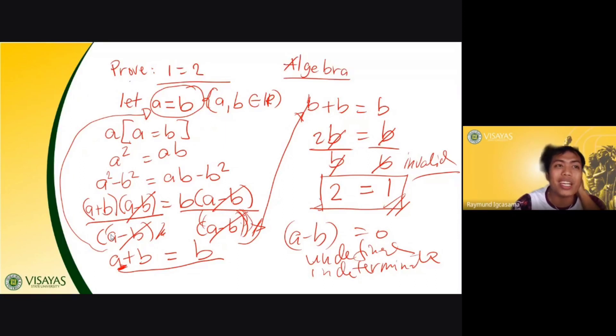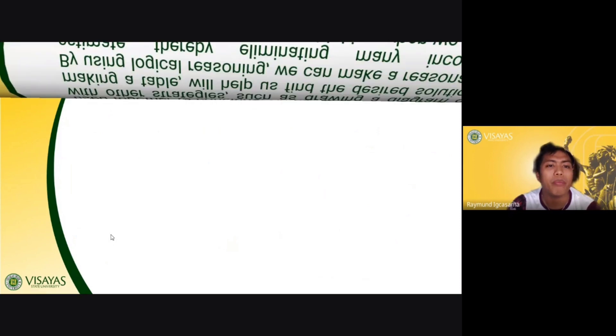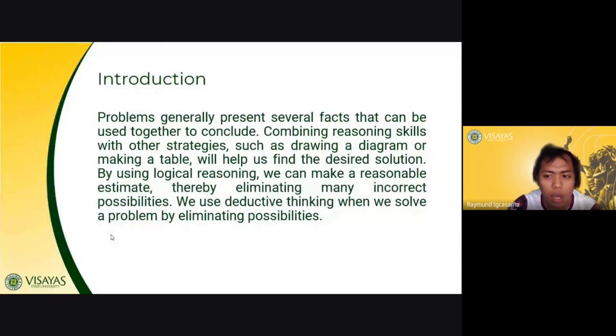For you to be able to determine whether your arguments, your statements are valid or invalid, we can say that the arguments or the premises are valid or invalid using the two methods of proving or reasoning, and that is using the inductive and deductive reasoning.